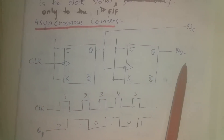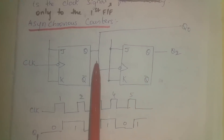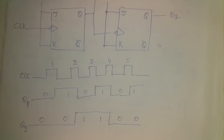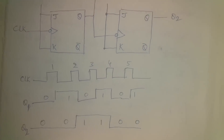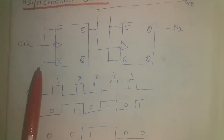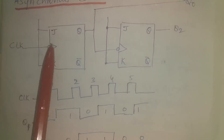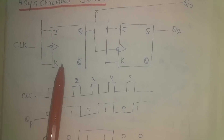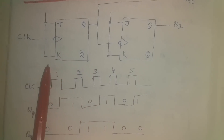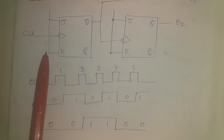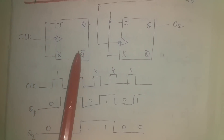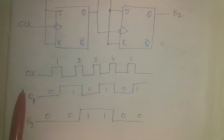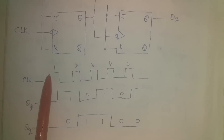The second flip-flop output changes with the negative transition of the first flip-flop. With J and K both high in a JK flip-flop, the output is the toggle of the previous state — if the previous state is low, the current state is high, and if the previous state is high, the current state is low.